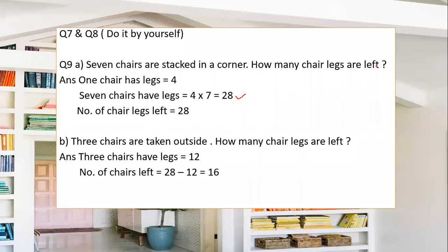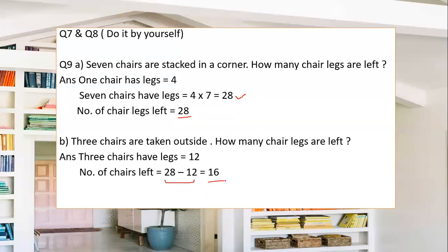Next: three chairs are taken outside — how many chair legs are left? Three chairs have 3 × 4 = 12 legs. We had 28 total, so 28 − 12 = 16 chair legs remaining.